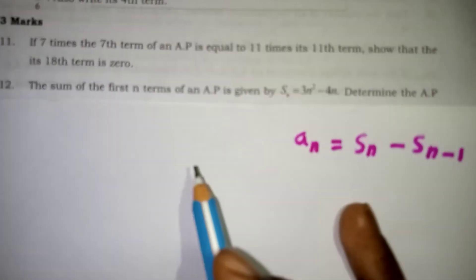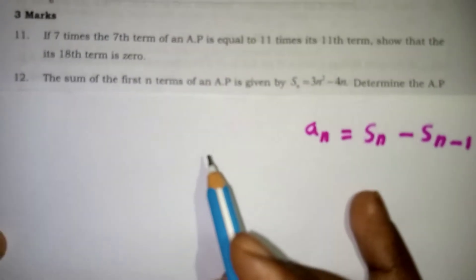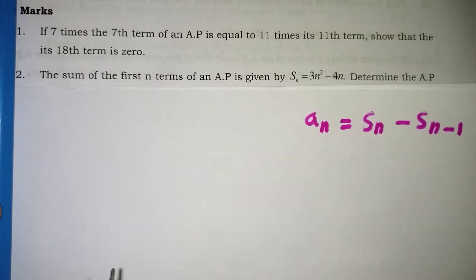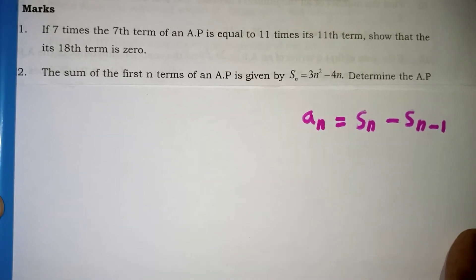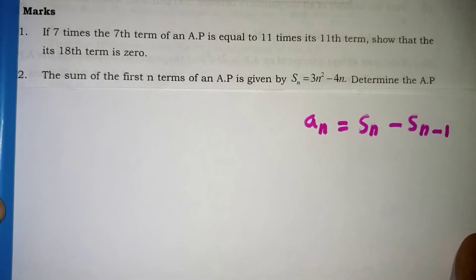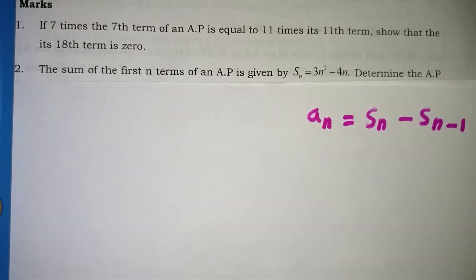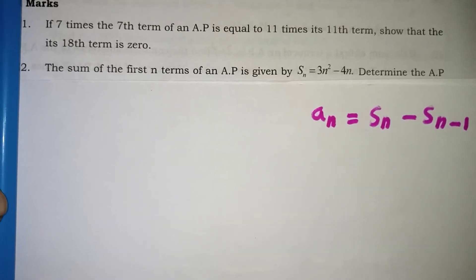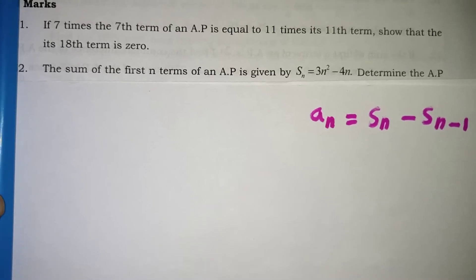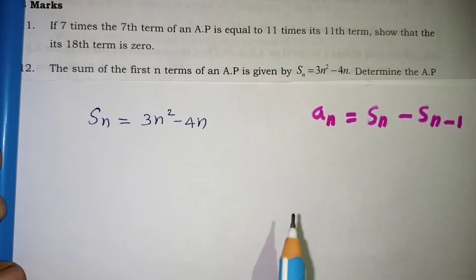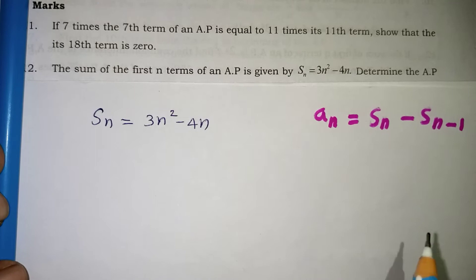Next question: the sum of the first N terms of an AP is given by SN = 3N² - 4N. We need to determine the AP — that is, write out the general form A, A+D, A+2D — by finding A1, A2, A3. The basic formula to find AN in terms of SN is AN = SN - SN-1.